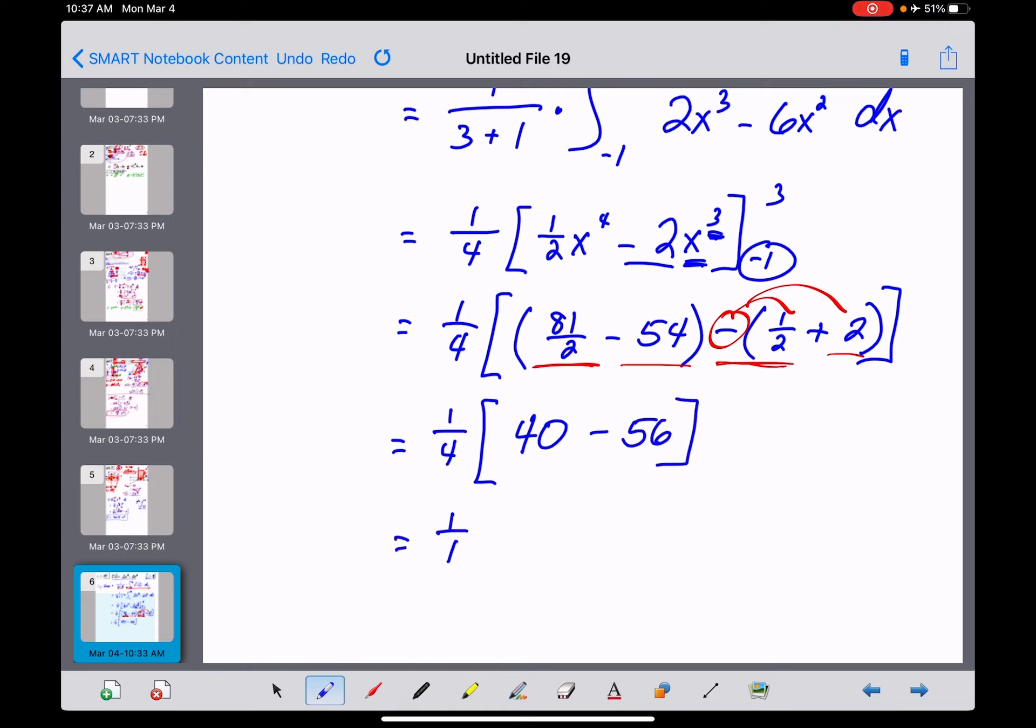So this is 1 fourth times a negative 16 right there. That works out nicely. And we end up with a negative 4 here for the average value of that function on this region.